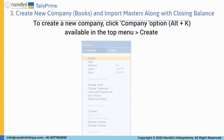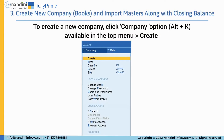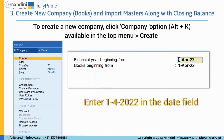And third is create new company and import masters along with closing balance. To create a new company, click the Company option available in the top menu and press Create. Now enter April 1, 2022 as the financial year beginning from date. The same date appears in the Books Beginning From field.